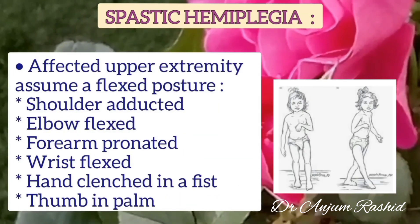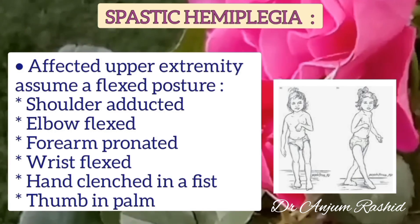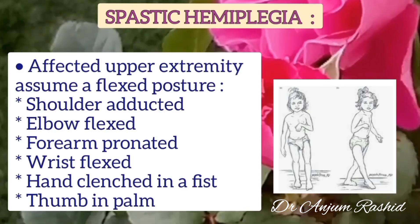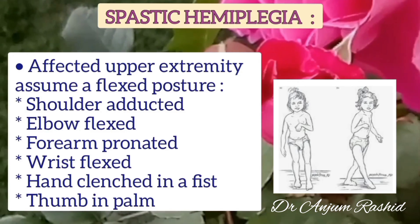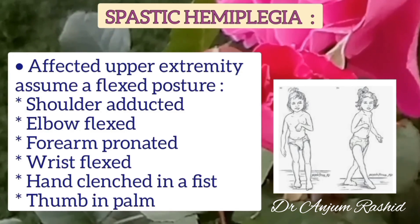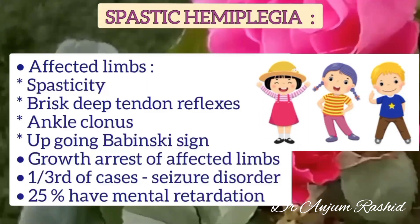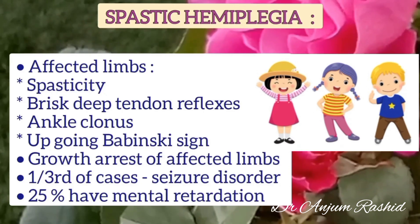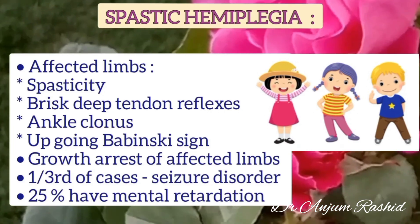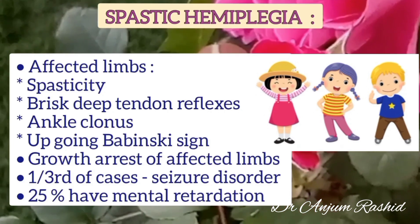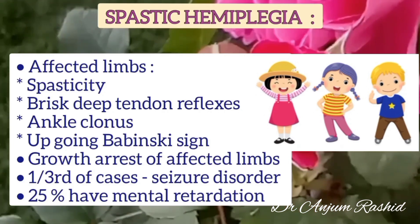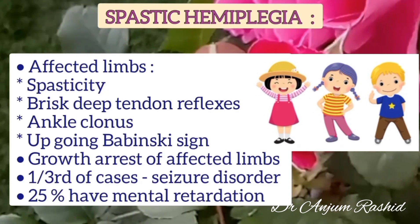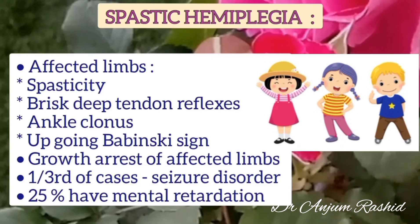In spastic hemiplegia, the affected upper extremity assumes a flexed posture: shoulder adducted, elbow flexed, forearm pronated, wrist flexed, hand clenched in a fist, and thumb in the palm. Upper motor neuron signs are positive: spasticity, brisk tendon reflexes, ankle clonus, and upgoing Babinski sign. There is also growth arrest of the affected limb. One third of cases have seizure disorders and 25% have mental retardation.